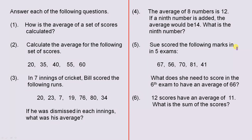The next one: Sue scored the following marks in five exams. There they are. What does she need to score in the sixth exam to have an average of 66? So there's another exam here that Sue has. Once she obtains a certain mark, her average is 66. What does that score have to be?